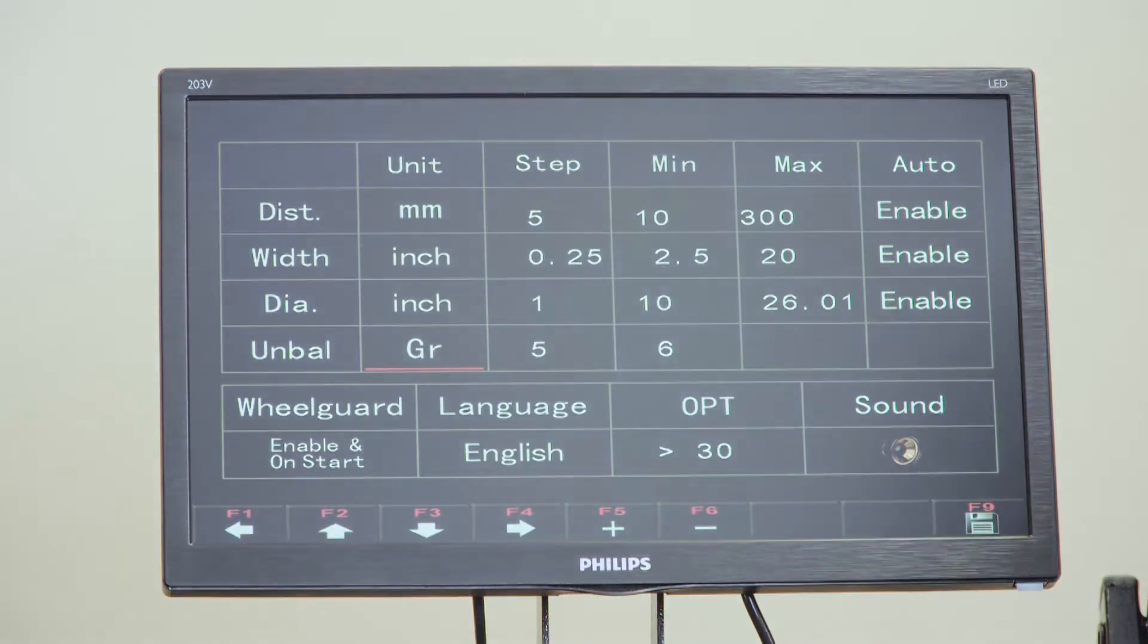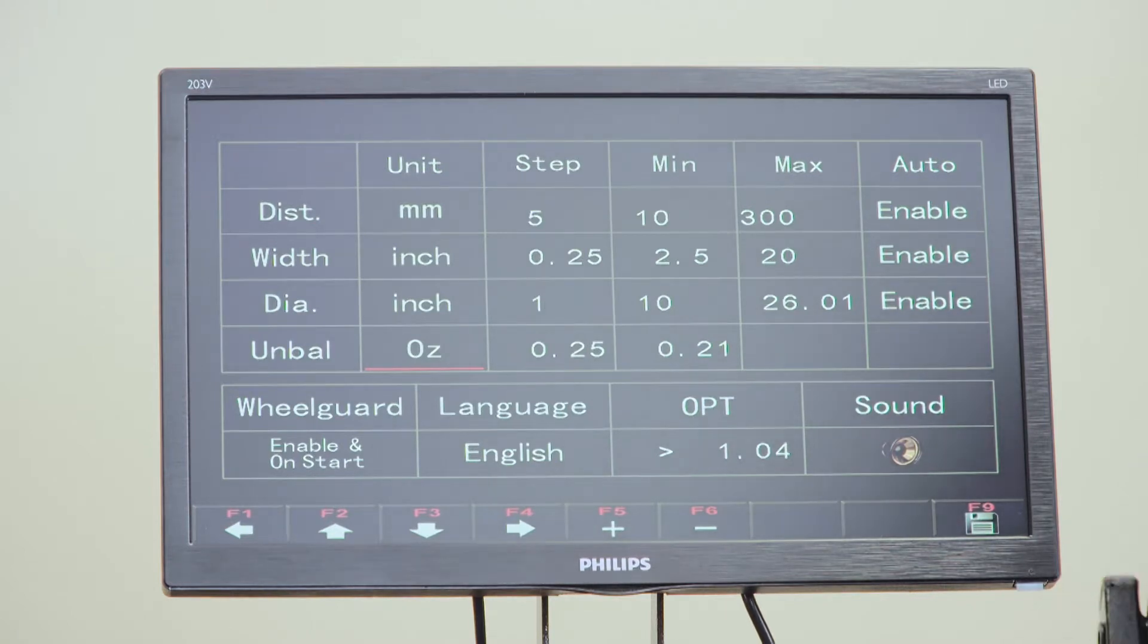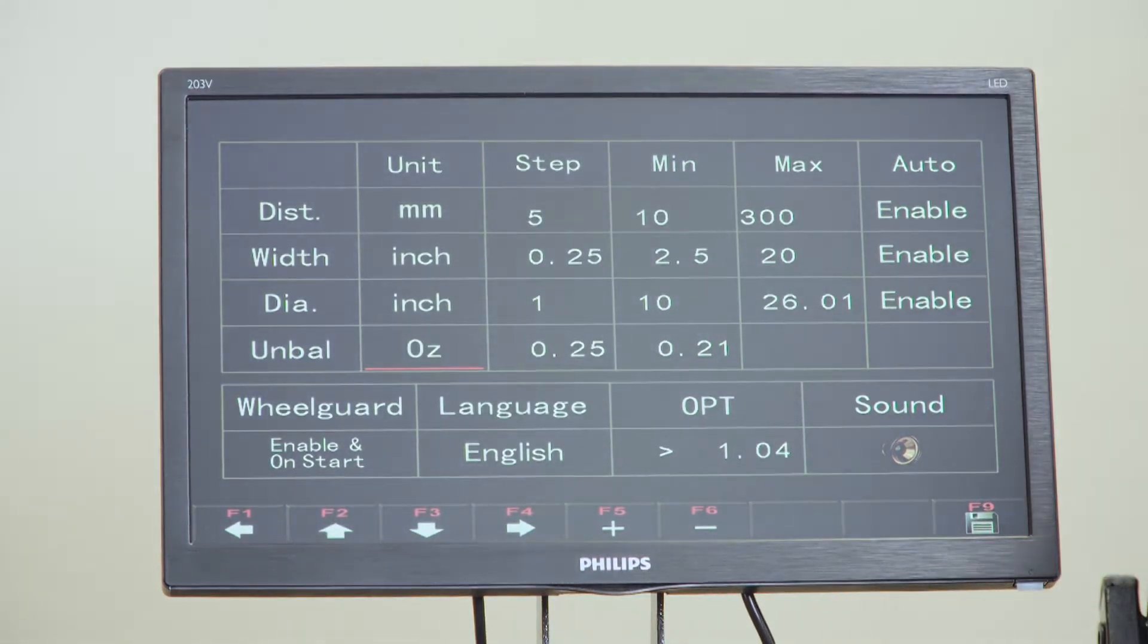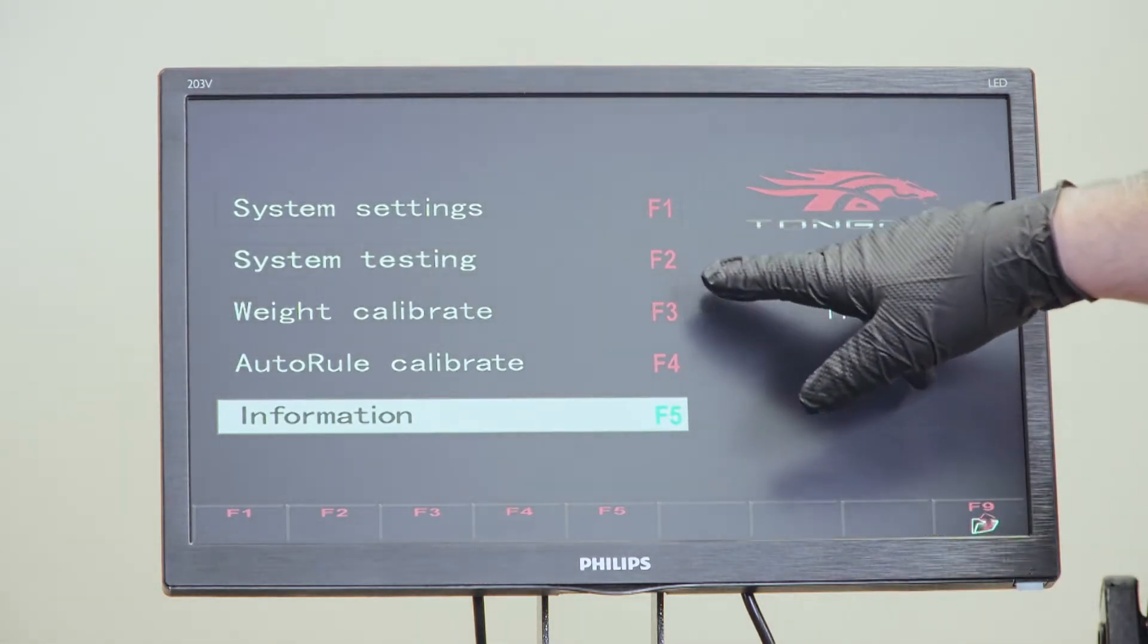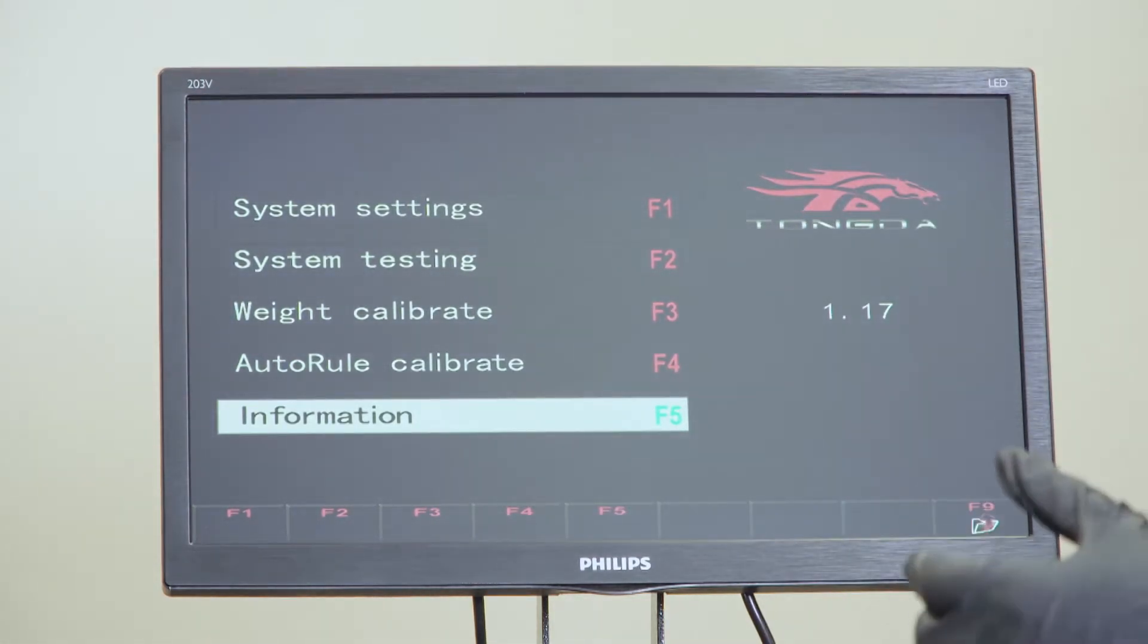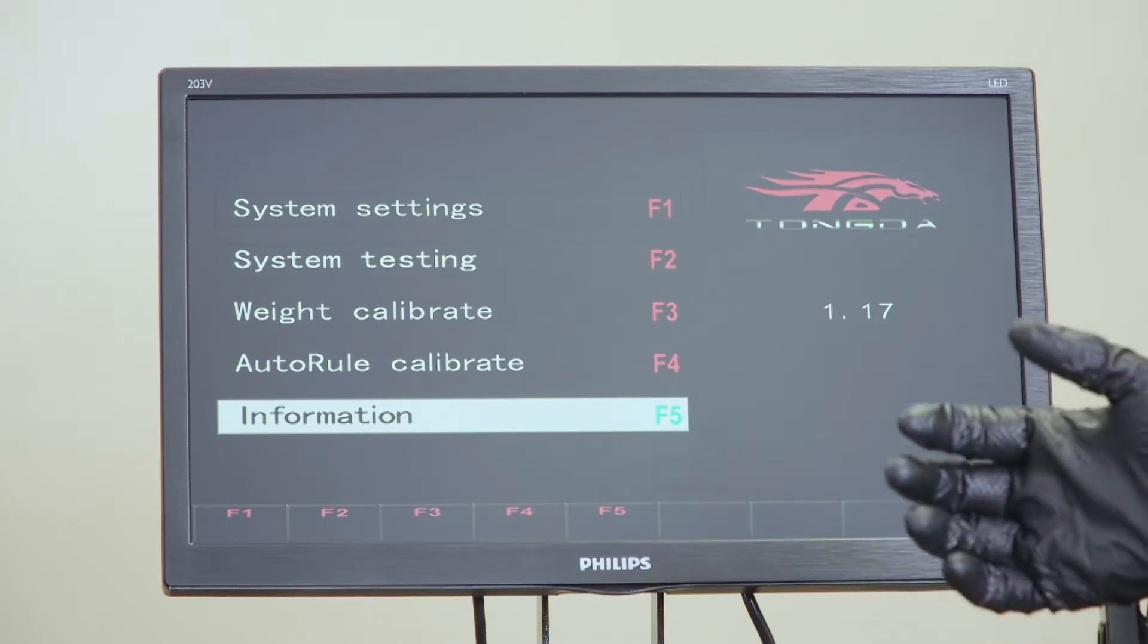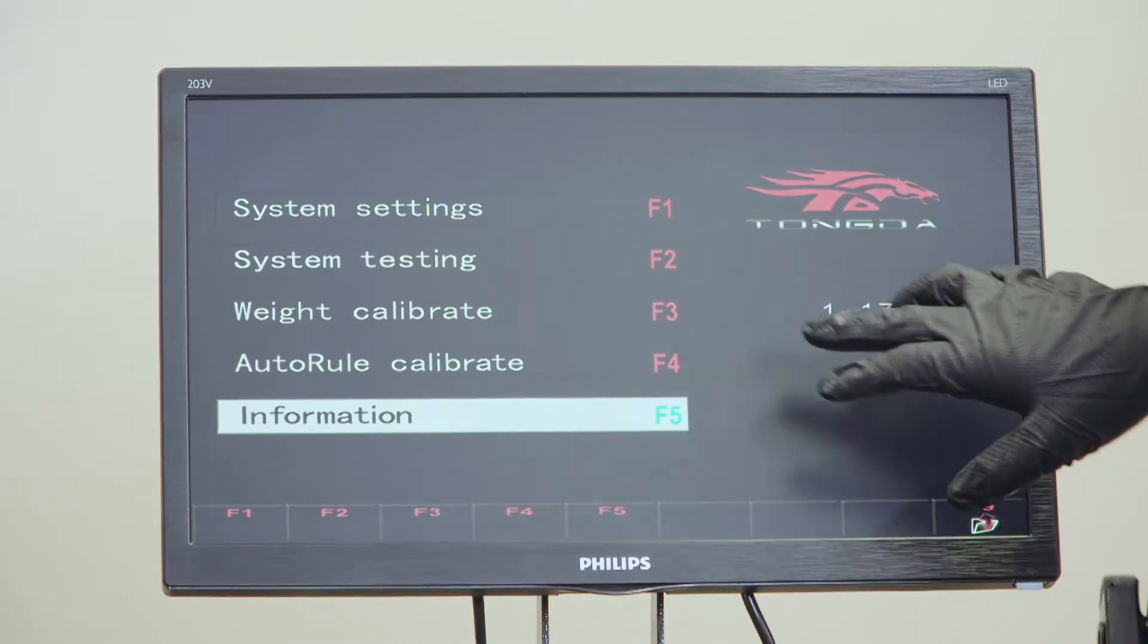You can always change it. To save it, you got to hit F9 to save. Then you got system testing. This is for us when we're doing service on a machine.